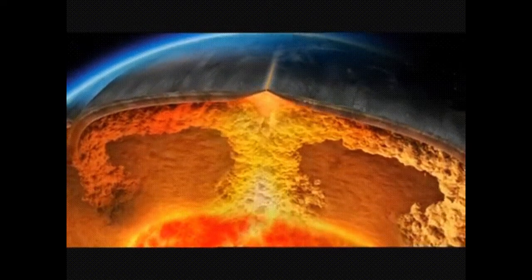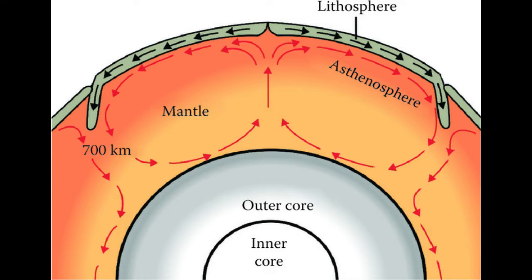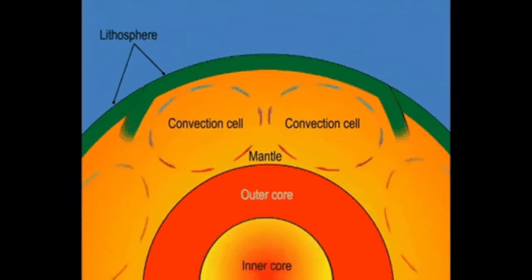Same thing happens to magma in the Earth's mantle. The nearer the magma to the outer core, the hotter it is. The farther the magma from the outer core, the colder it is. The hotter magma will go up and once its temperature decrease, it will go down.